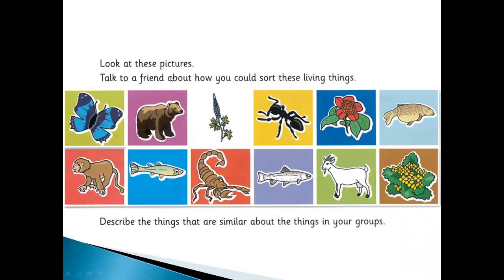Look at this picture. Talk to a friend about how you could sort these living things. You can sort according to their features — animals with feathers, animals with fur, animals and plants. You can make groups as you like. For example: butterfly and fish have scales, so you can put them in the group of animals with scales; goat, bear, and monkey are animals with fur.